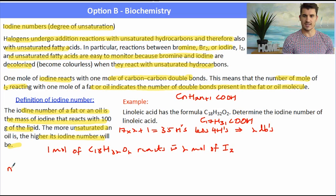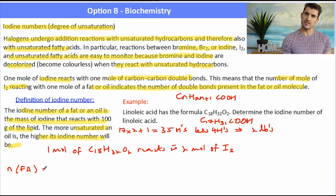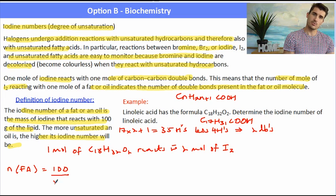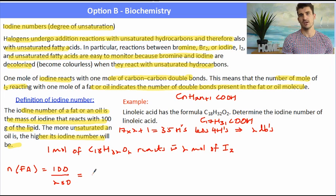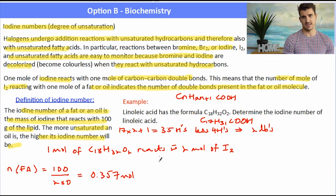So the way that we can work out the answer to this question, the iodine number, is we start off with the number of moles of the fatty acid. We know from the definition that it's per 100 grams of fatty acid. So we do 100 divided by the molar mass to give us the number of moles of the fatty acid.